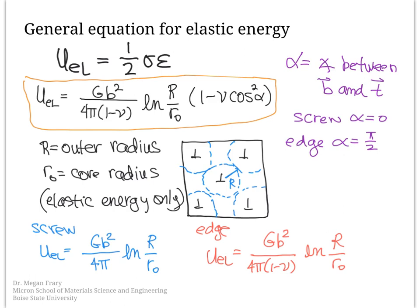The values we don't know in this equation are R₀ and capital R. We usually assume the core radius R₀ is about four times the Burgers vector, which means the only thing we really need to figure out is how to find a value for R, the dislocation spacing.